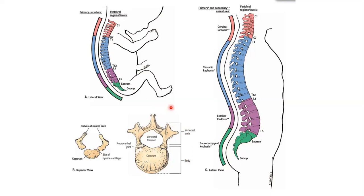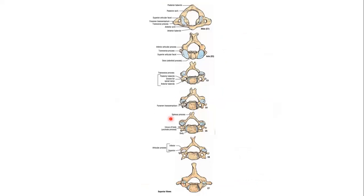These are the seven vertebrae of the cervical spine. Atlas C1, axis C2, and vertebra prominens C7 are the atypical ones — their features are different from the rest. The third, fourth, fifth, and sixth cervical vertebrae are typical. So C3, C4, C5, C6 are typical; C1, C2, and C7 are atypical. The typical vertebra will be studied as one representative, while atlas, axis, and C7 will each be studied separately.